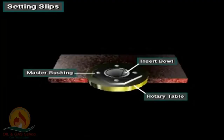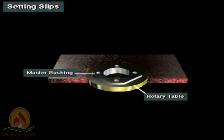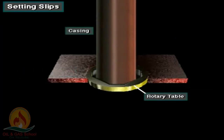Crew members can remove the insert bowls to provide a larger opening through the rotary table. If necessary, they can also remove the master bushing. They may have to do this to run a large hole opener bit or large casing. Casing is pipe that the crew runs to line the walls of the hole after they drill it.